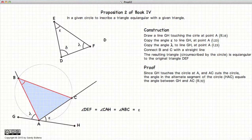To prove this, well, we have to go back to Book 3, Proposition 32. But basically it states that since GH is touching the circle at A, and since AC cuts the circle, this angle epsilon is equal to the alternate segment.